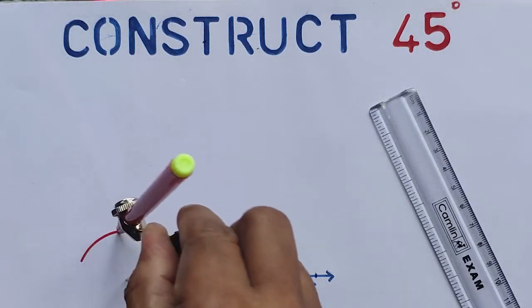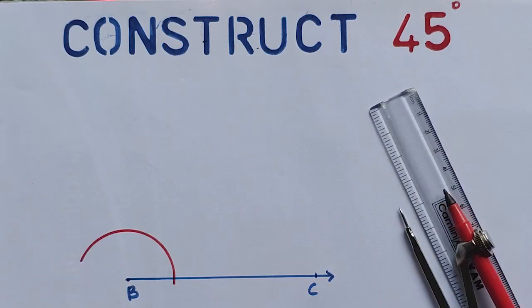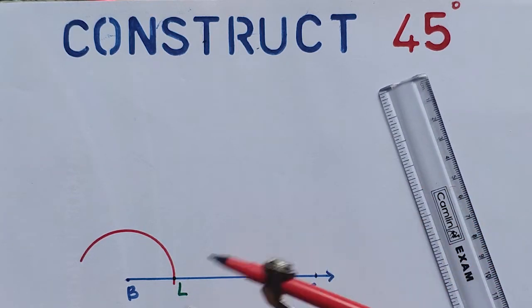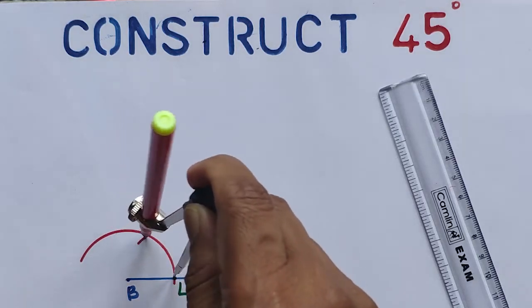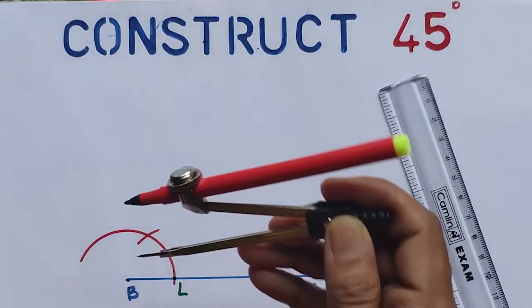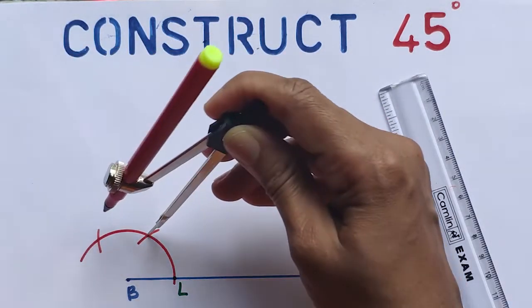Then without changing the compass, place the metal tip on L and draw an arc. That means we have constructed 60 degrees. Then again construct one more 60 degrees, which will be 120 degrees.